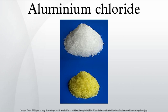Aluminium chloride is the main compound of aluminium and chlorine. It is white, but samples are often contaminated with iron trichloride, giving it a yellow color.